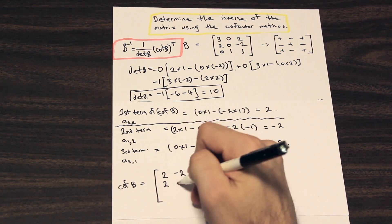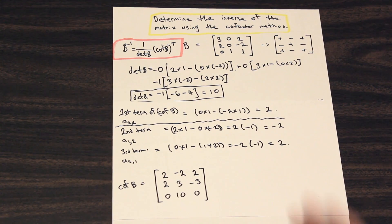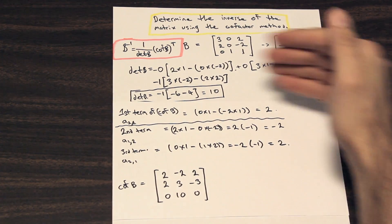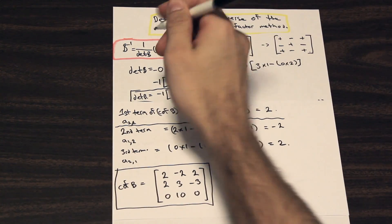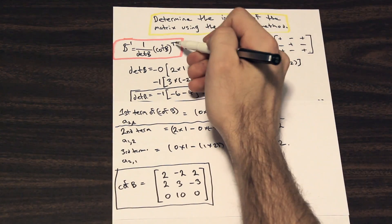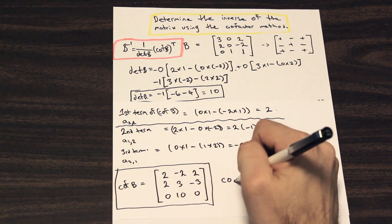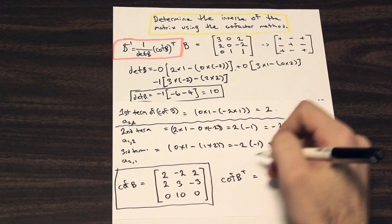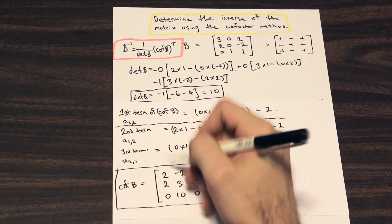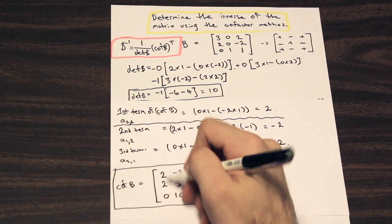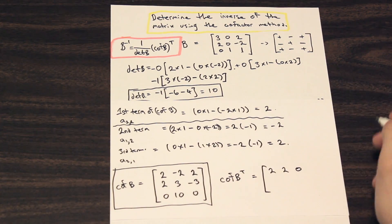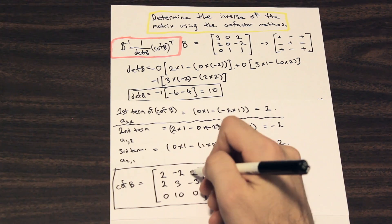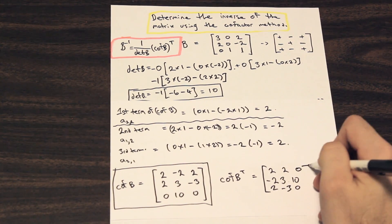If you want to try filling in the remaining terms yourself, stop the video and give it a go — great practice for your exam. We now have the determinant of B and the cofactor of B, so we have everything needed to find the inverse. The transpose of the cofactor matrix flips the columns and rows: the first column becomes the first row, giving us rows [2, 2, 0], [−2, 3, 10], [2, −3, 0].